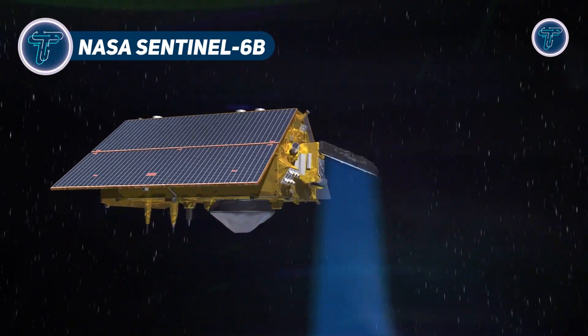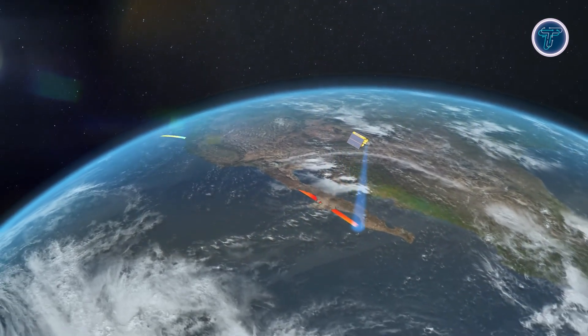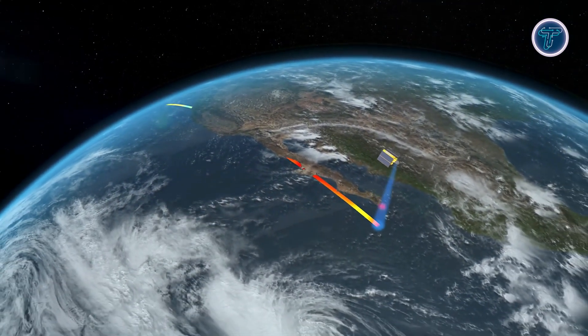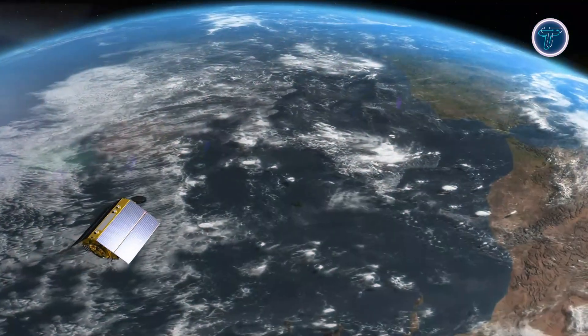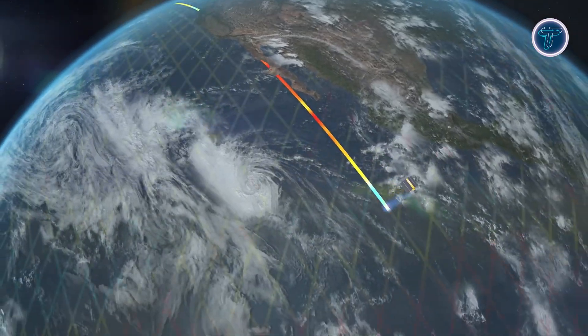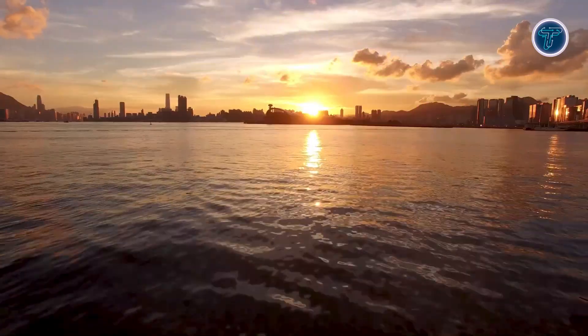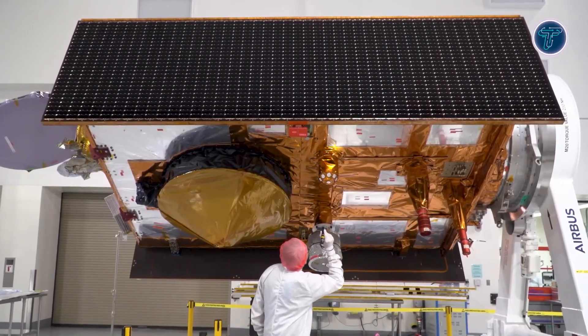NASA Sentinel-6b. Sentinel-6b is an advanced Earth monitoring satellite designed to deliver the most accurate global sea level data ever recorded from space. Developed through a major international collaboration, this satellite continues a decades-long mission that tracks how our oceans are rising and changing.